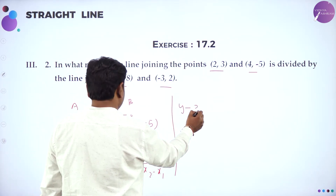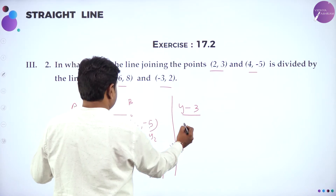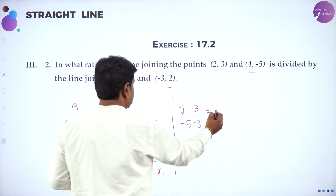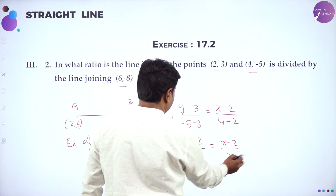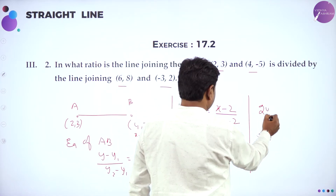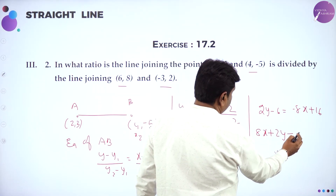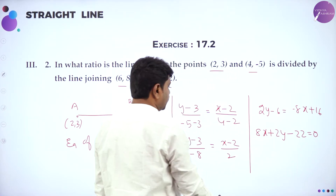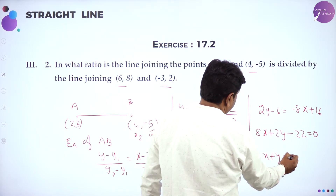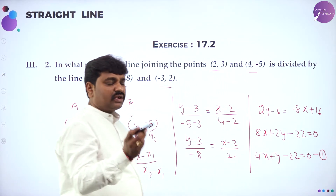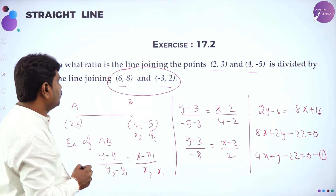Using the two-point form with points (2, 3) and (4, -5): (Y minus 3) divided by (minus 5 minus 3) equals (X minus 2) divided by (4 minus 2), giving (Y minus 3) divided by minus 8 equals (X minus 2) divided by 2. Cross-multiplying: 2Y minus 6 equals minus 8X plus 16, so 8X plus 2Y minus 22 equals 0. Dividing by 2: 4X plus Y minus 11 equals 0. This is the equation of line AB.